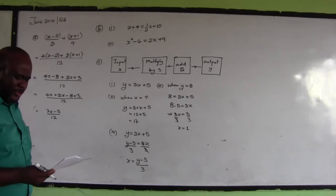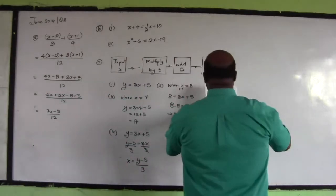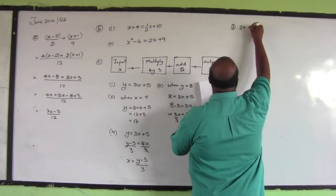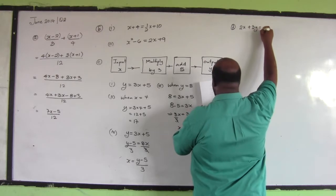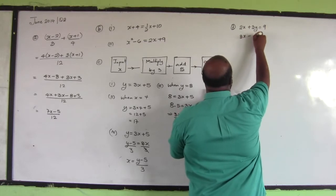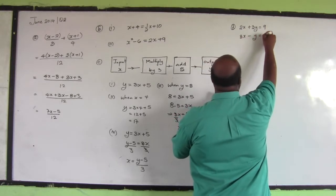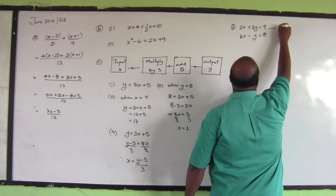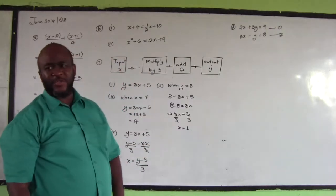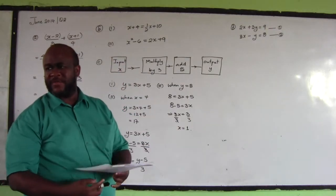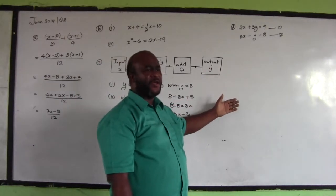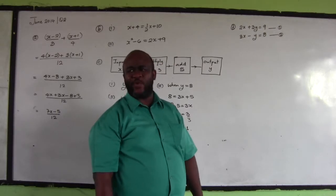Part D: solve the following simultaneous equations. Equation 1: 2x plus 3y equals 9. Equation 2: 3x minus y equals 8. I'm going to solve these using the method of elimination. It is possible to eliminate either x or y — I'm going to eliminate y.